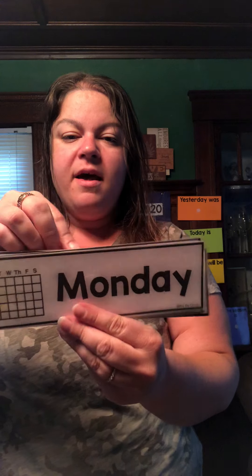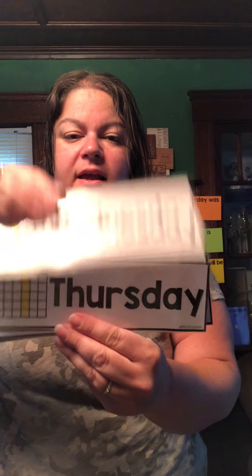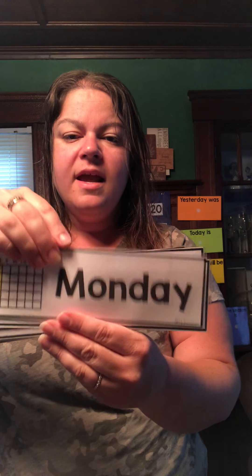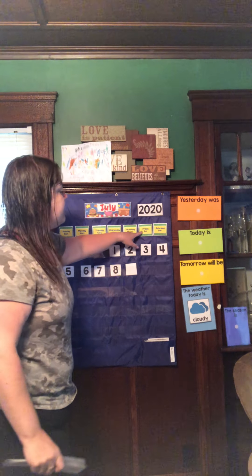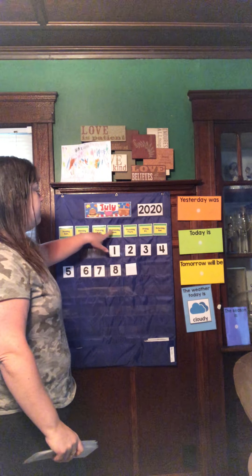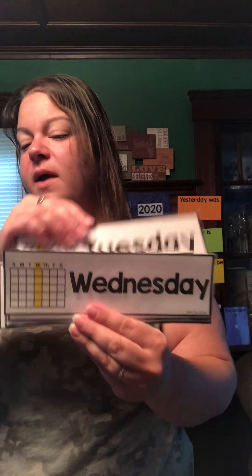Let's begin with our Days of the Week song. Let's find out what day today is. Here we go. Sunday, Monday, Tuesday, Wednesday, Thursday, Friday, Saturday. There are seven days, there are seven days, there are seven days in a week. One, two, three, four, five, six, seven. Sunday, Monday, Tuesday, Wednesday, Thursday, Friday, Saturday.